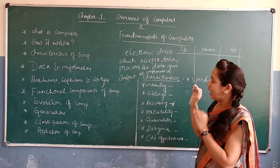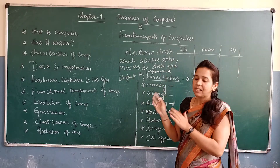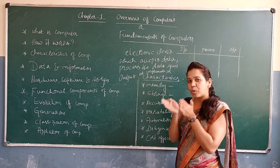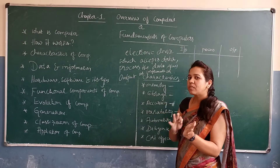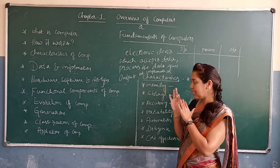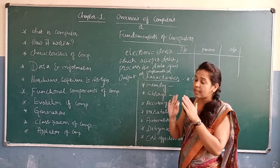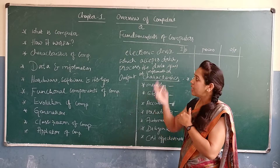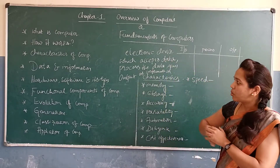So, what is a computer? A computer is an electronic device which accepts the data, then processes the data, then gives the output as a result or as an information. That is about the computer.